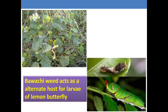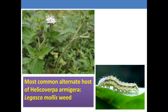The babachi weed also acts as an alternate host for lemon butterfly larvae, another major pest of citrus orchards. Lagasca mollis is also a weed that is the most common alternate host for Helicoverpa armigera, a major polyphagous pest in different crops.